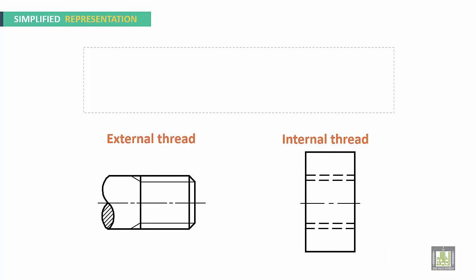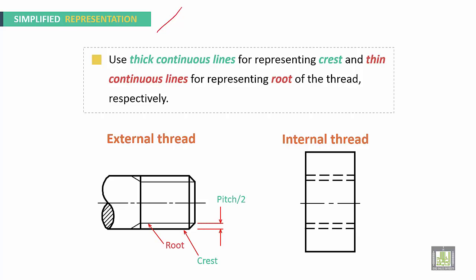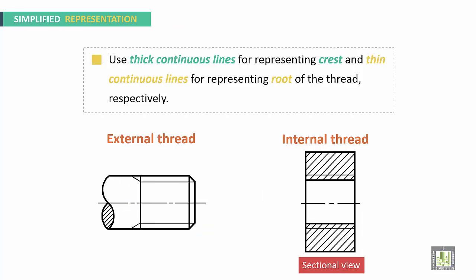For the simplified representation — which will be adopted and used for this course — thick continuous lines represent crests and thin continuous lines represent roots of the thread. Here we have the root and here we have the crests. This is the chamfer, and here is the pitch and half of pitch. This zone or region is the thread run out. For the sectional view of internal thread, the hatching lines will cross the root lines.